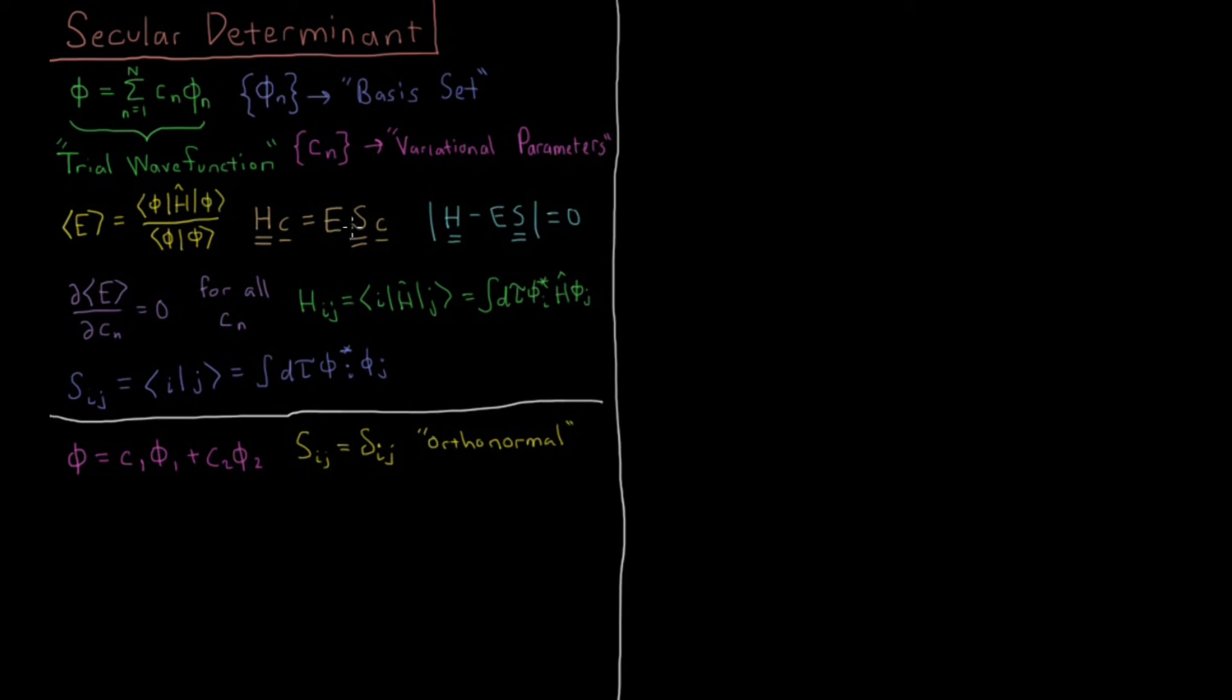We have our overlap matrix S, which is just the integral of i*j over all of the wave functions, so that enforces normalization by having this matrix there. E is the energy of whatever system we're talking about, and c is just a vector with all of these variational coefficients in there. And that vector should, in the end, be normalized to 1 because of this S matrix.